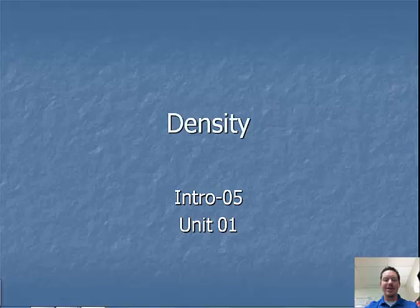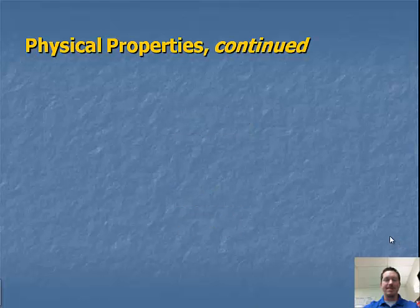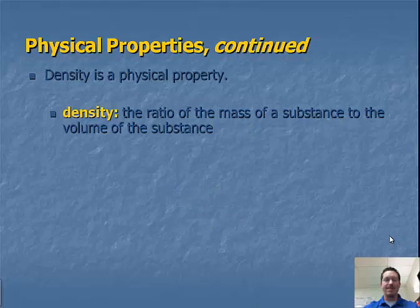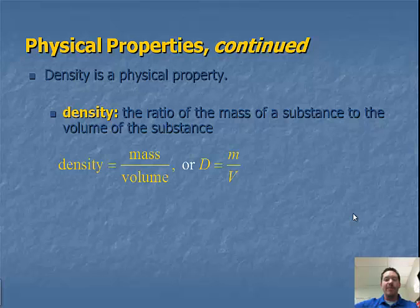Hi there, and welcome to our lecture on density. So as we said in the previous lecture, density is a physical property. And to redefine density, it's the ratio of the mass of a substance to the volume of a substance. We can represent this by the chemical formula, density equals mass divided by volume, or we can abbreviate each of those to variables, so d equals m divided by v.